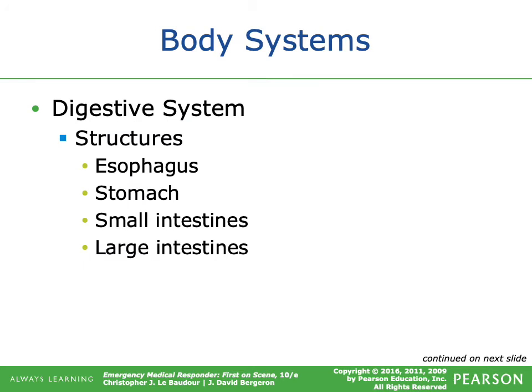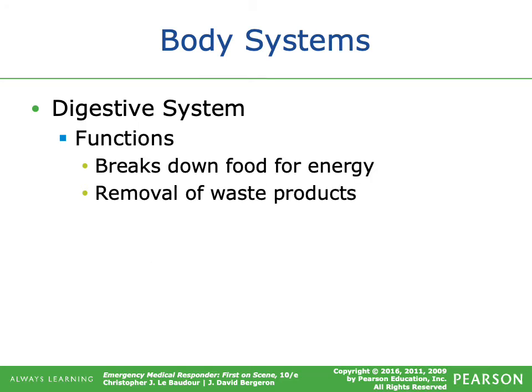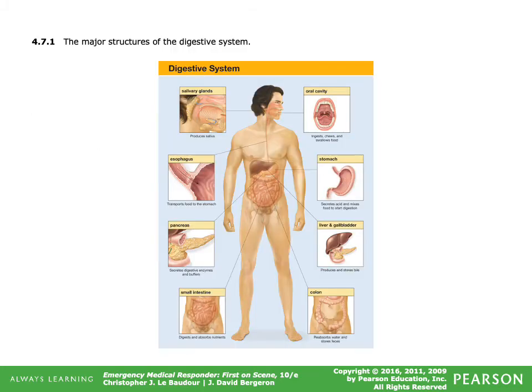The digestive system's major structures are the esophagus, stomach, small intestines, and large intestines. Its functions are to break down food for energy and remove waste products from your body.